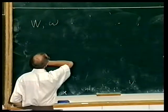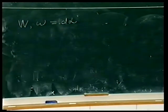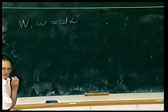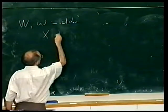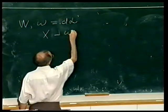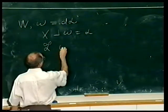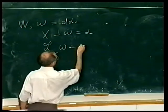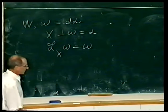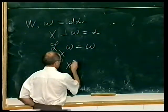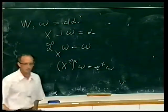Then you can consider a vector field X which is dual to the primitive of the symplectic form with respect to the symplectic form itself. This vector field has the property that if I take the Lie derivative of omega along X, I get back omega. This means that if you consider the flow generated by this vector field, it multiplies the symplectic form by e^t, so it acts by conformal symplectic dilations.